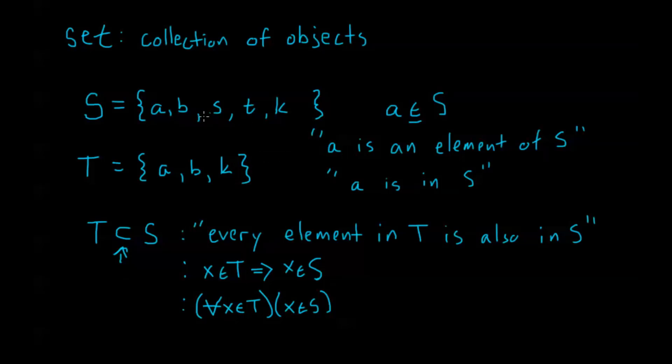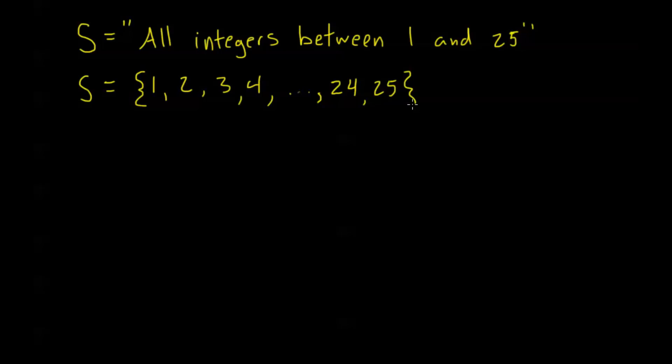I want to give a couple of examples of sets, and kind of introduce a couple of ways that we can express these sets. So let's say I have this set S. And this set is equal to all integers between 1 and 25. Now using our set notation, there's a couple of ways that I can write this. I can say S is equal to, and I want this bracket to enclose all my elements, and then I can list them all. 1, 2, 3, 4. I'm going to put these three dots. That means I'm going to continue on in the same fashion. I'm going to follow this pattern. And then I'm going to finalize this 24, 25.